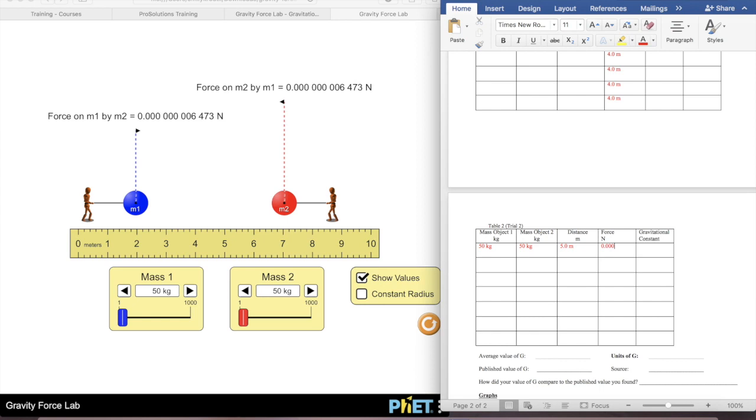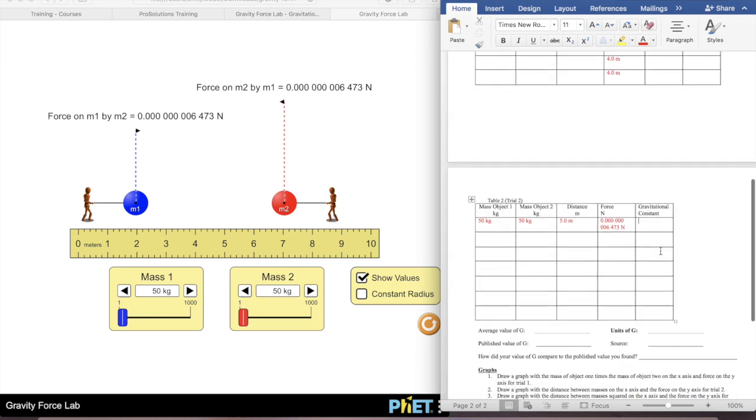So I'm going to put 0.000, 0.00, 0.006, 4, 7, 3.